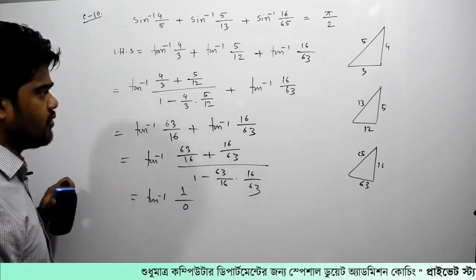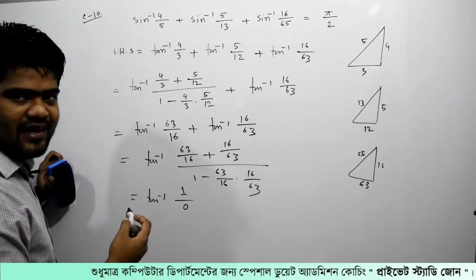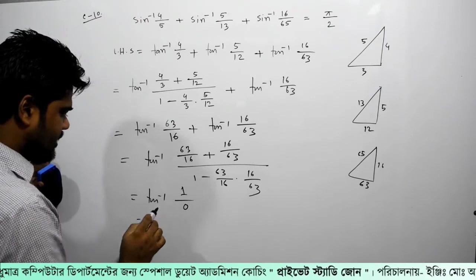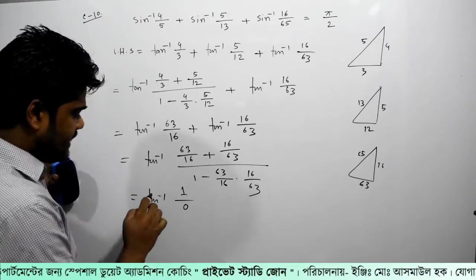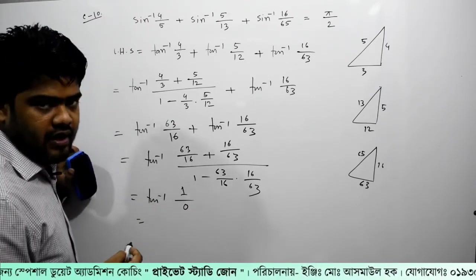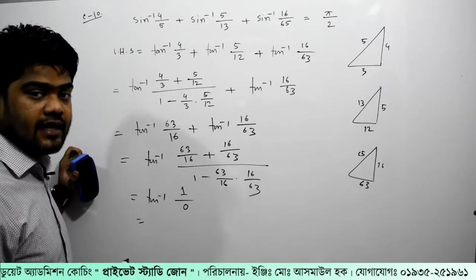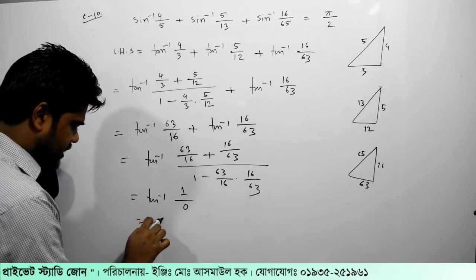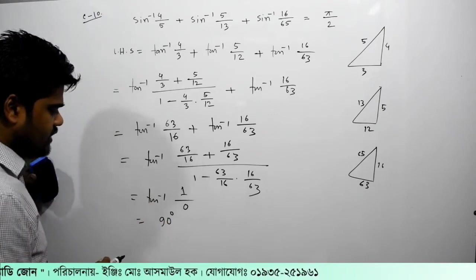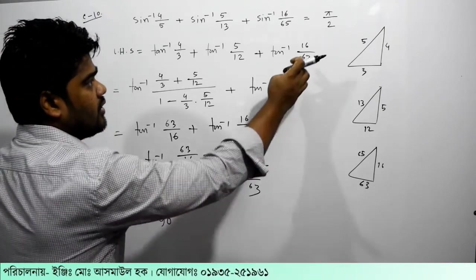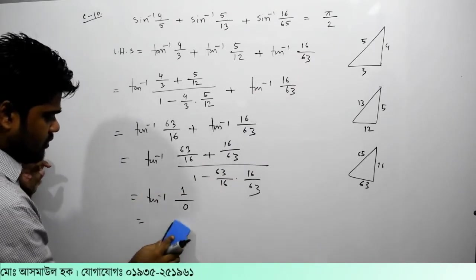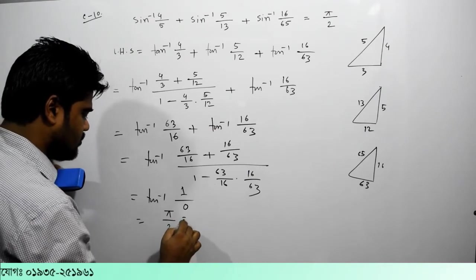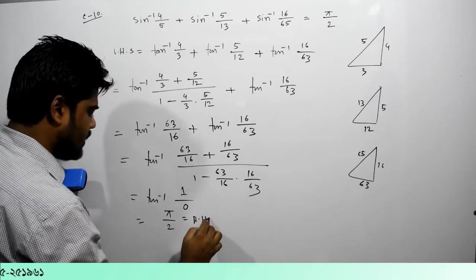Tan inverse infinity is 90 degrees. If you have 90 degrees, we will have pi by 2. This is pi by 2 is equal to RHS.